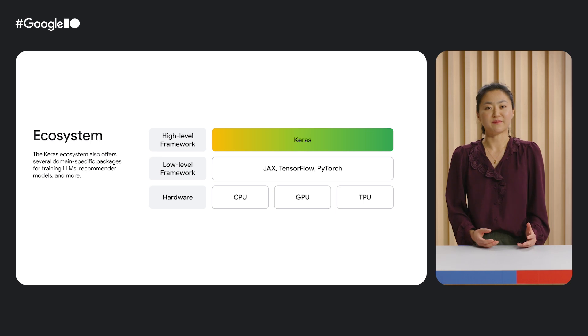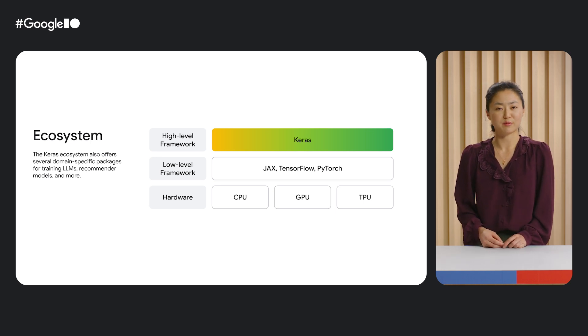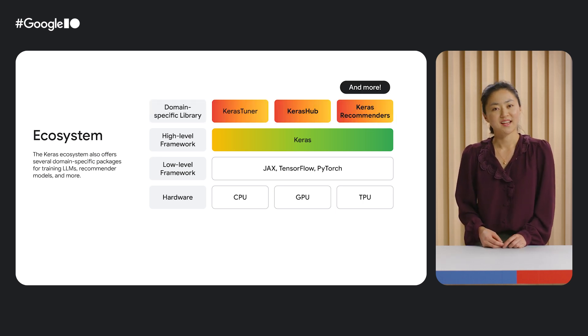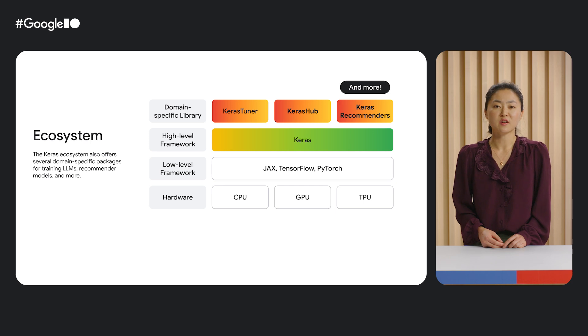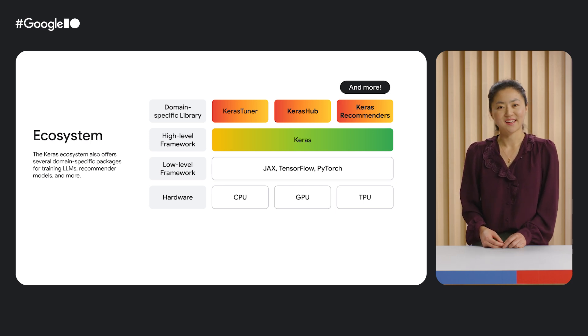Finally, the Keras ecosystem extends beyond the core library. Keras also has other domain-specific libraries, such as Keras Tuner, Keras Hub, Keras Recommenders, and more. Now let's turn to Divya to tell us all about Keras Hub.